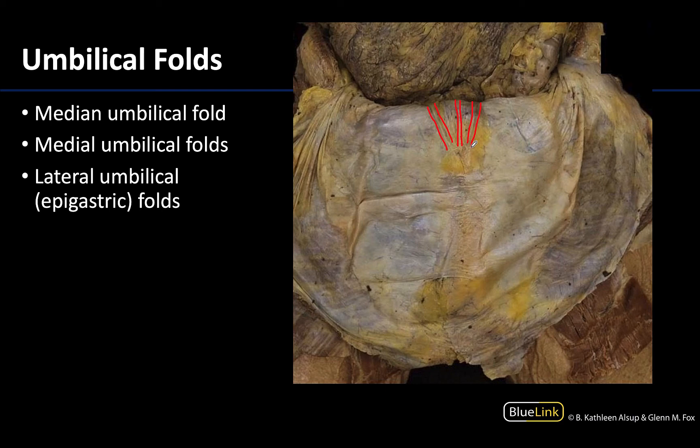So the median umbilical ligament, of which there is only one, is in the median plane, and the medial umbilical ligaments are going to be medial to the lateral umbilical folds.